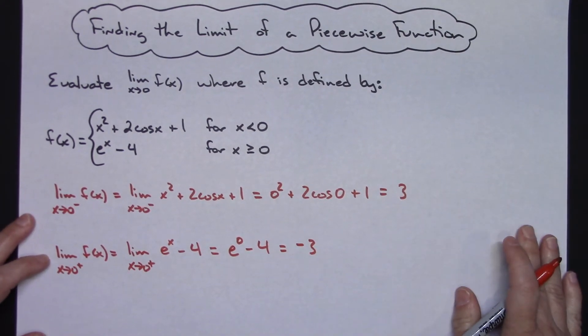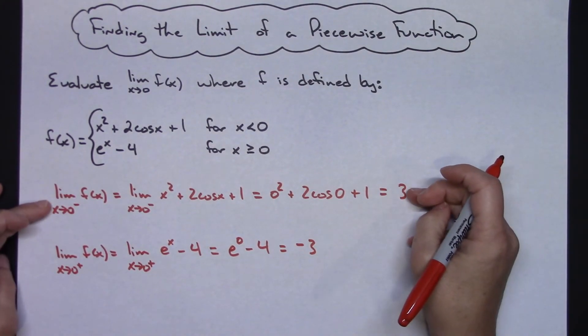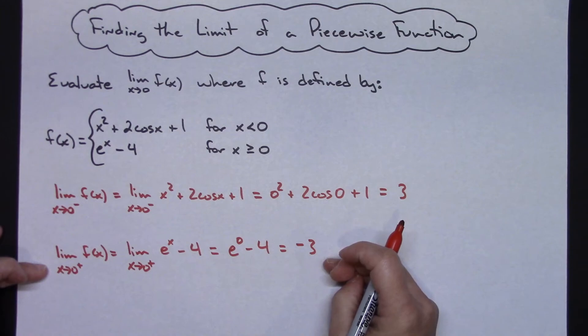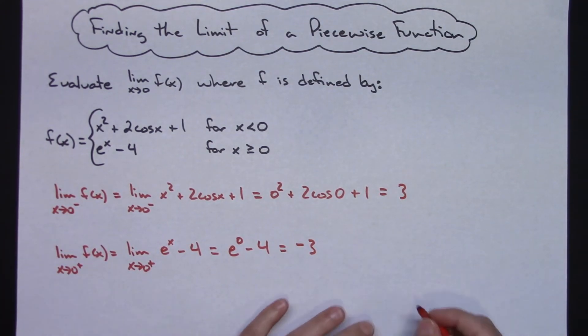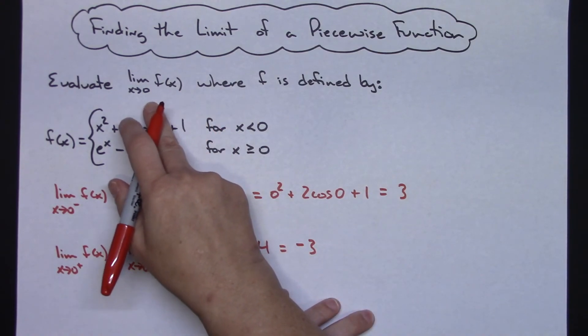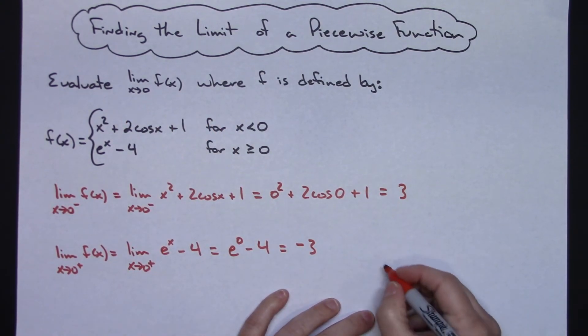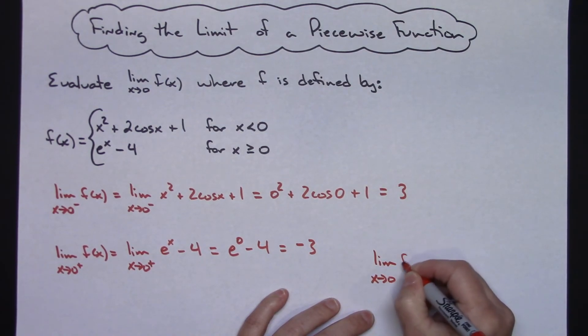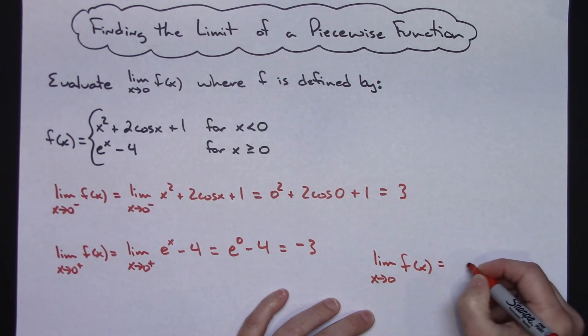From this I can then conclude that the limit from the left is 3, the limit from the right is negative 3. Therefore, since those values do not equal, then my limit of the overall x approaching 0 of f(x) does not exist. So the limit as x approaches 0 of f(x) does not exist.